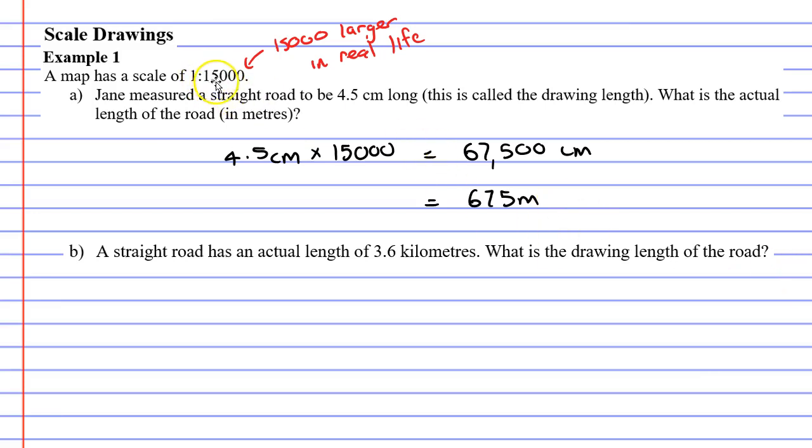Well, because we know that everything on the map is 15,000 times larger in real life, if we take the real life measurement, we need to make it 15,000 times smaller. So how do we do that?